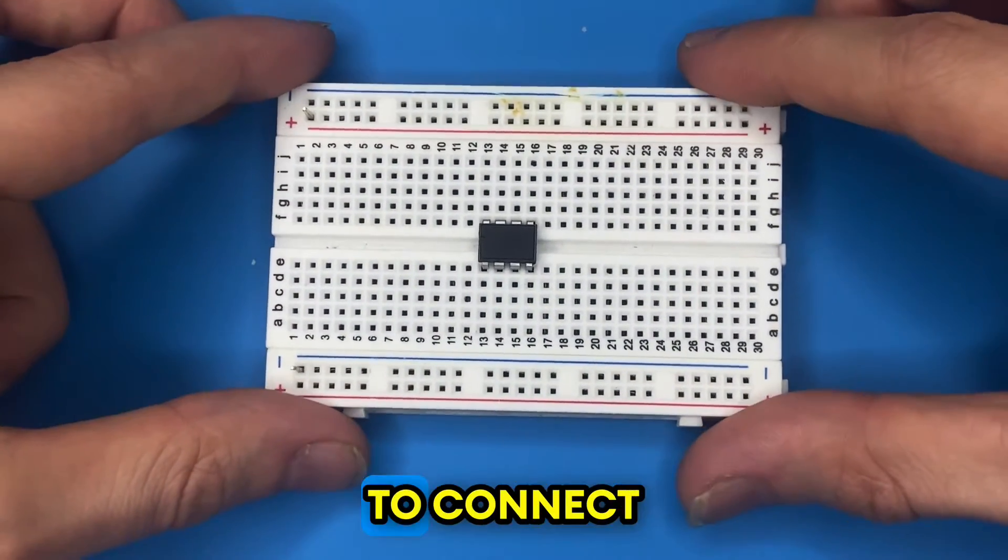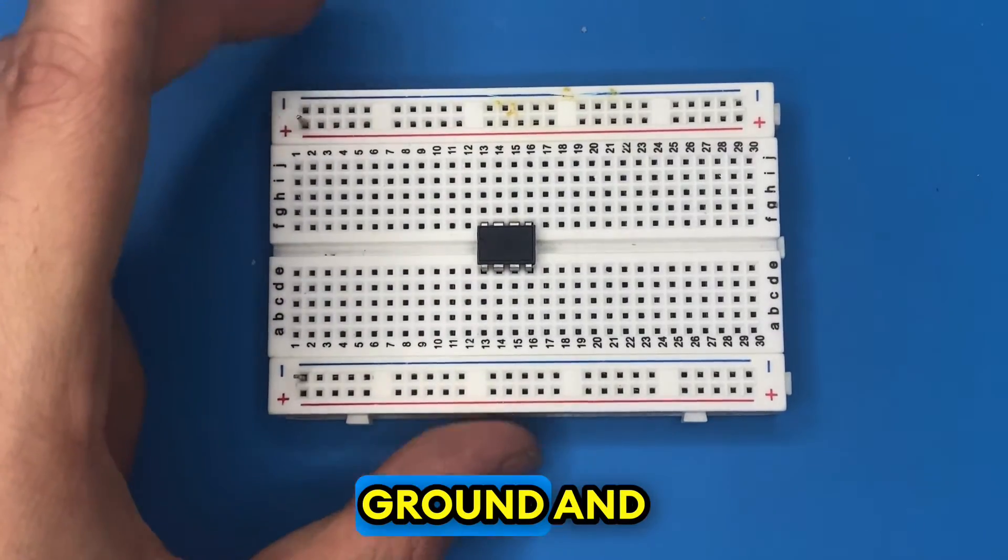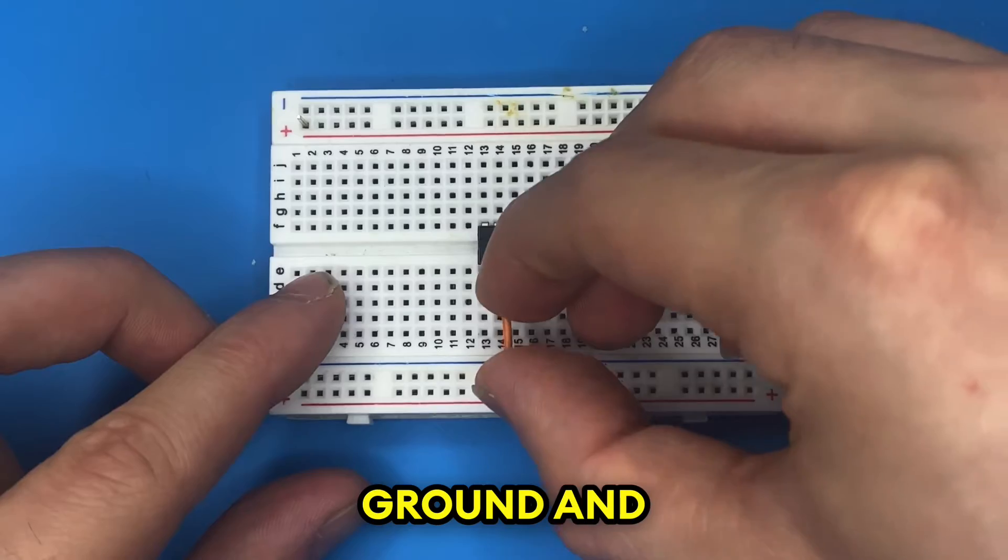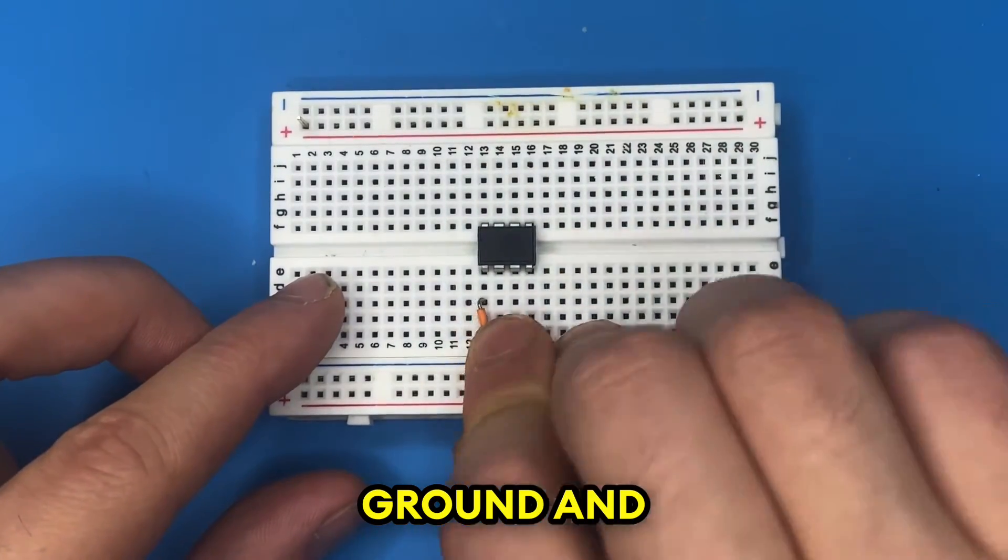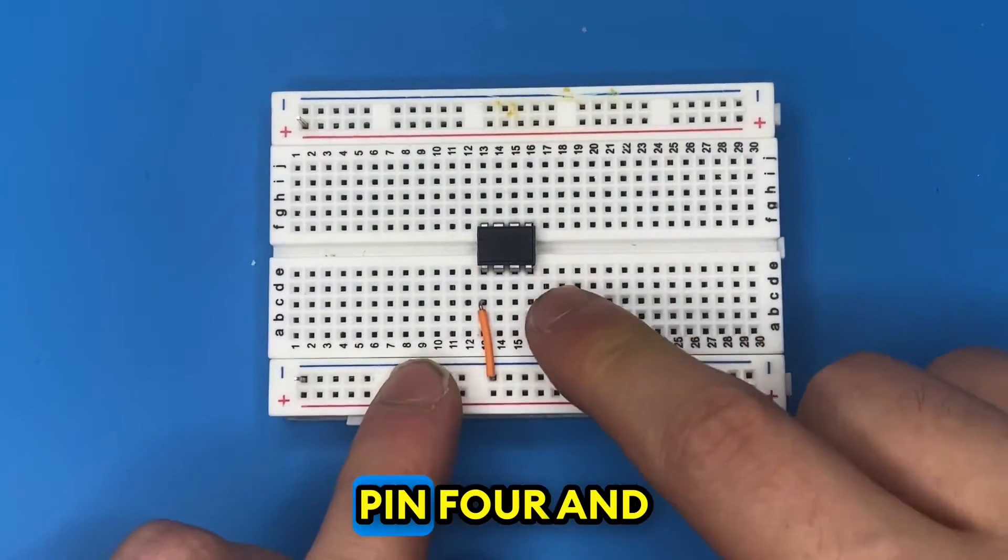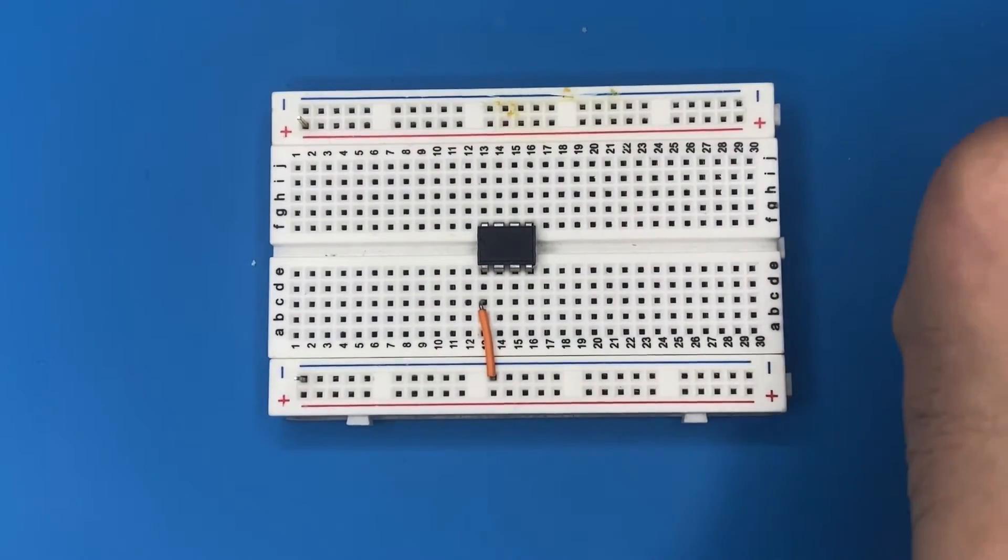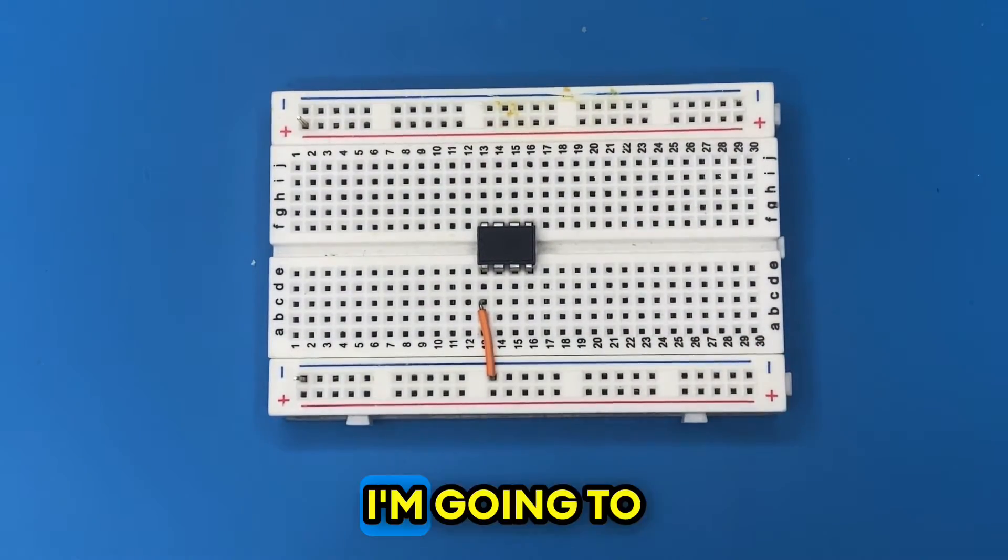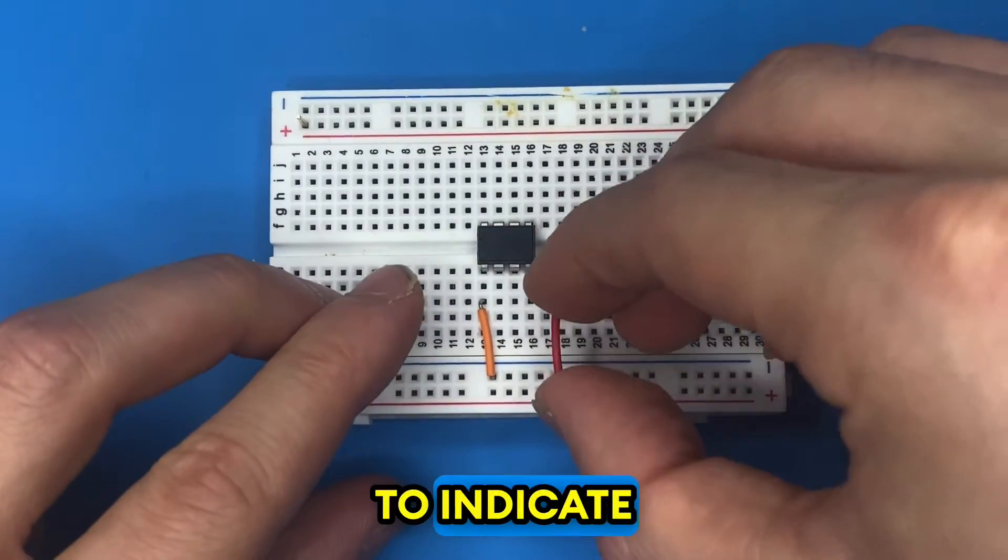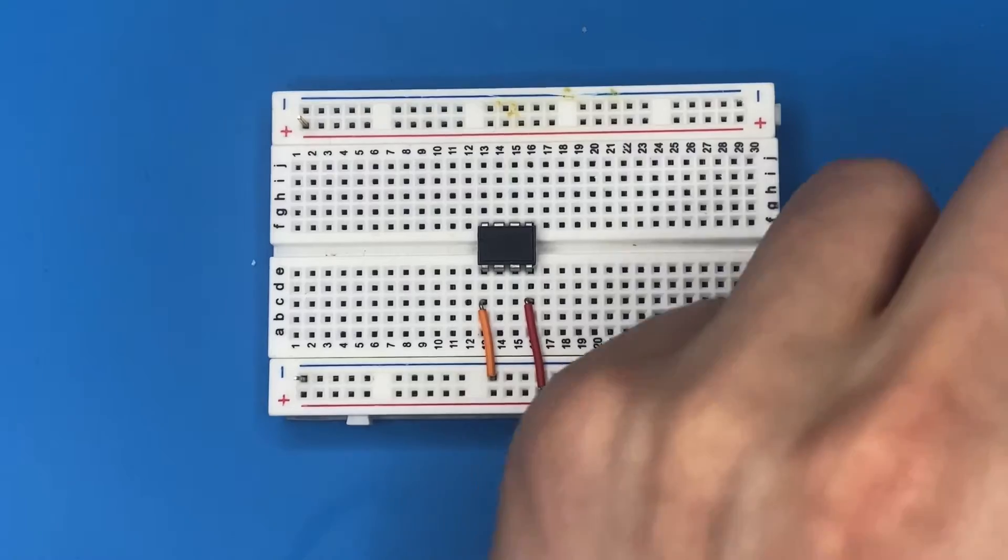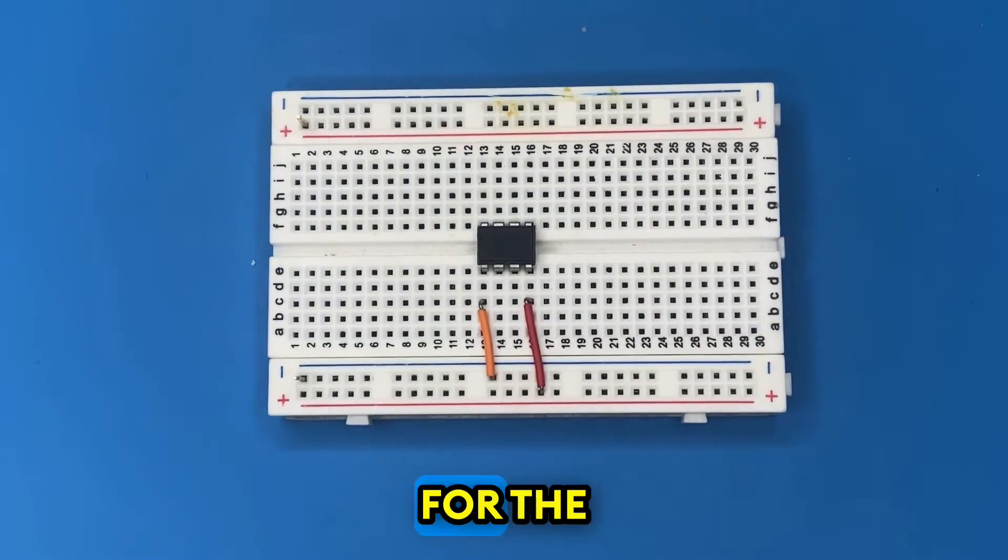So I'm gonna connect the first pin to ground, and pin four and eight to the power rail. I'm going to use the red jumper wires to indicate the power connection and the orange ones for the ground.